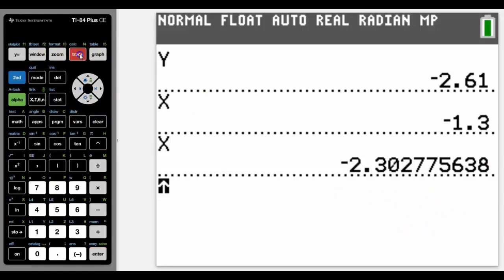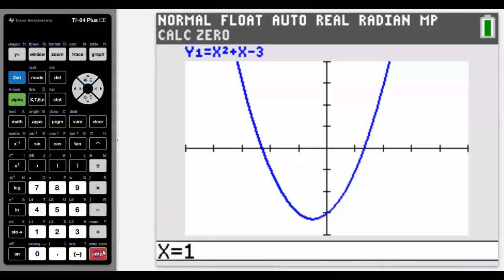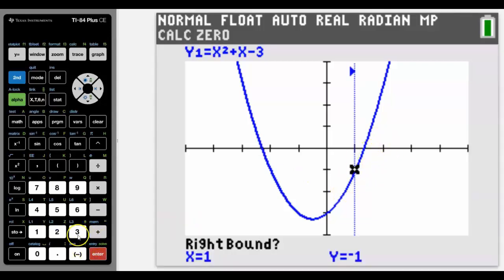Another way to find the zero without using the cursor is still to go the same sort of setup, but let's say we're finding this right hand zero. We know it's somewhere between one and two, so we can simply type in one for the left bound and two for the right bound.